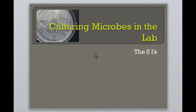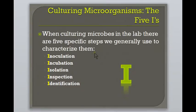As part of Module 1, it is important to understand the process of culturing microbes in the lab. When culturing microbes, especially bacteria, in the laboratory setting, there are five steps that are generally used. These steps are referred to as the five I's, as each step starts with the letter I. The five steps are inoculation, incubation, isolation, inspection, and identification.